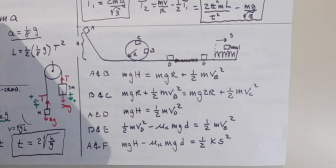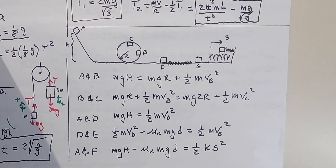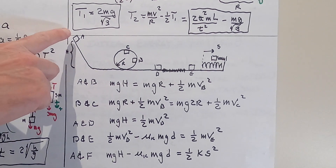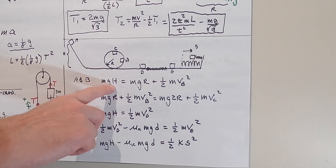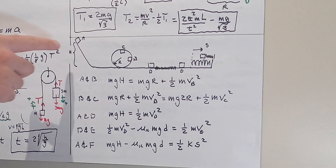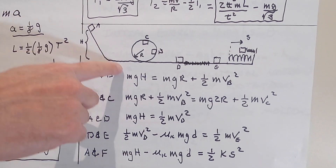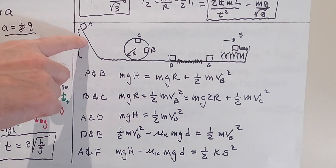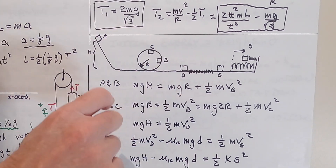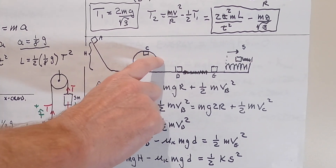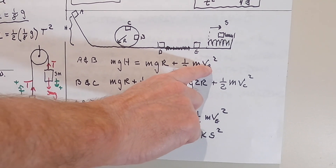All I asked was to write out the energy equation between different points. Between A and B: at A it's all potential due to gravity — no kinetic, no spring energy — so it's mgh. By the time it gets to B, its height is r (equal to the center of the loop), so it has mgr plus one half mv_B squared.